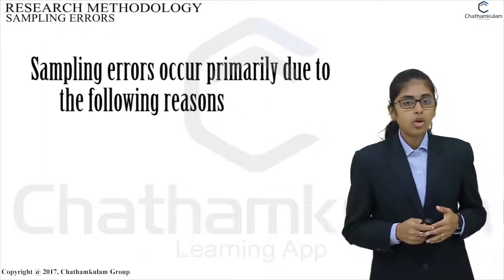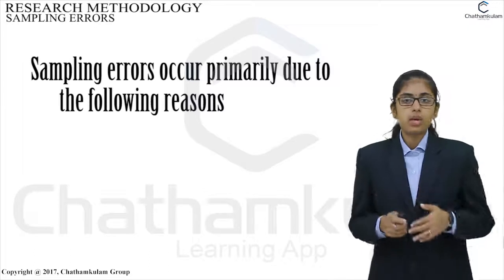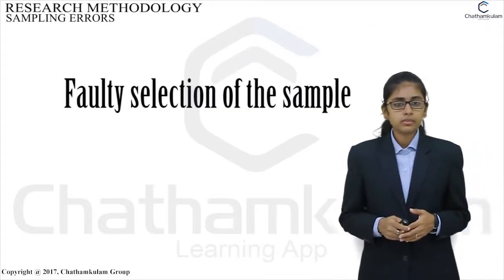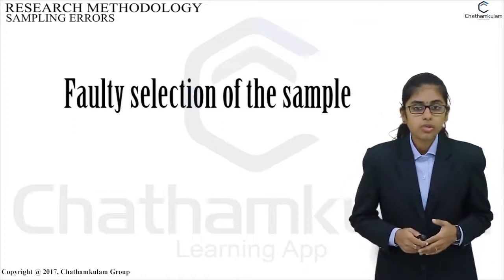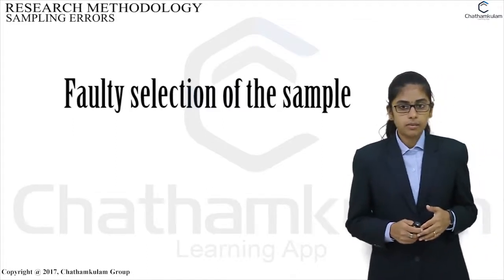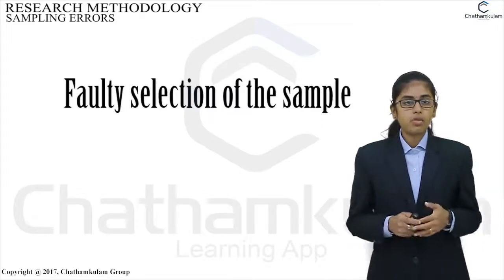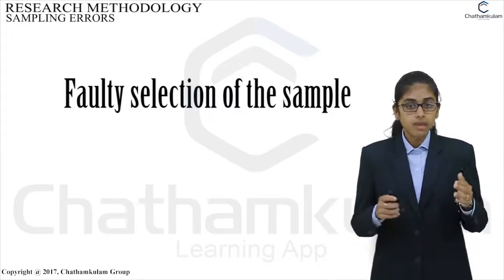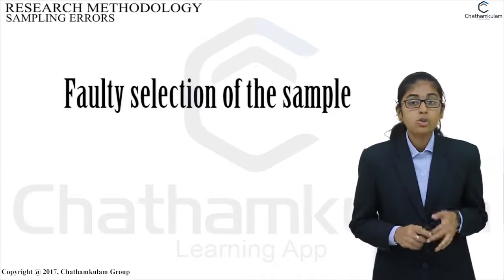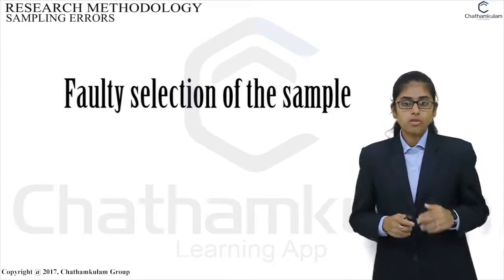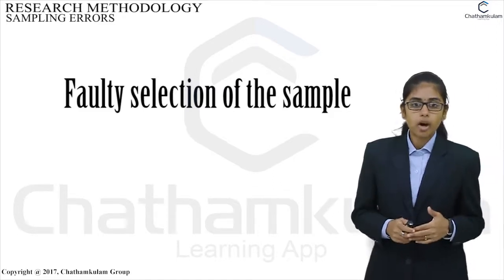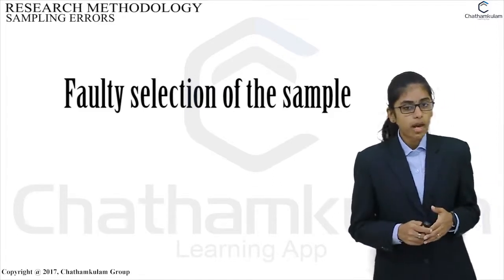Sampling errors occur primarily due to the following reasons. Faulty selection of the sample: some bias is introduced by the use of a defective sampling technique for the selection of a sample. For example, purposive or judgment sampling, in which the investigator deliberately selects a representative sample to obtain certain results. This bias can be easily overcome by adopting the technique of simple random sampling.